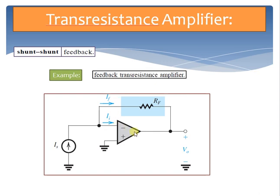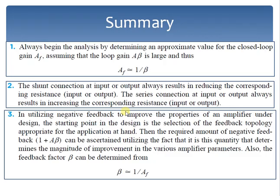To confirm negative feedback: if IS increases, the input current II increases, causing the voltage at the inverting input to go negative and rise. In response, the output voltage decreases, causing an increase in the feedback current IF. Thus IF and IS have the same polarity, confirming the feedback is negative.